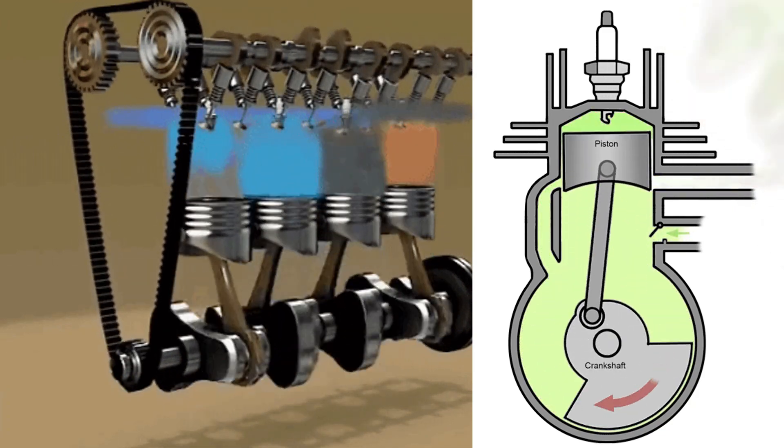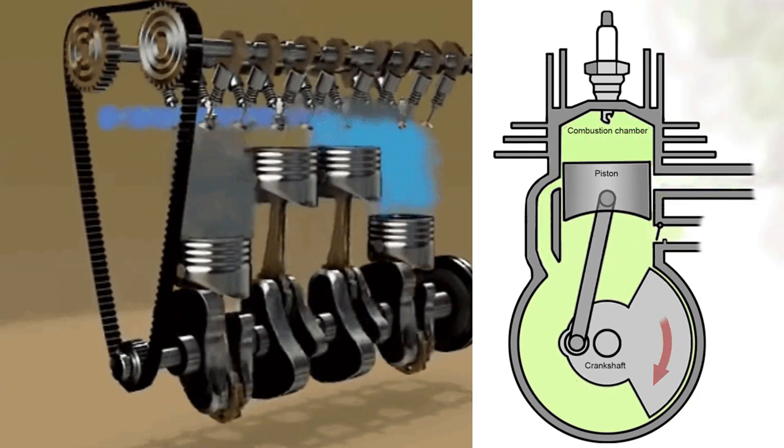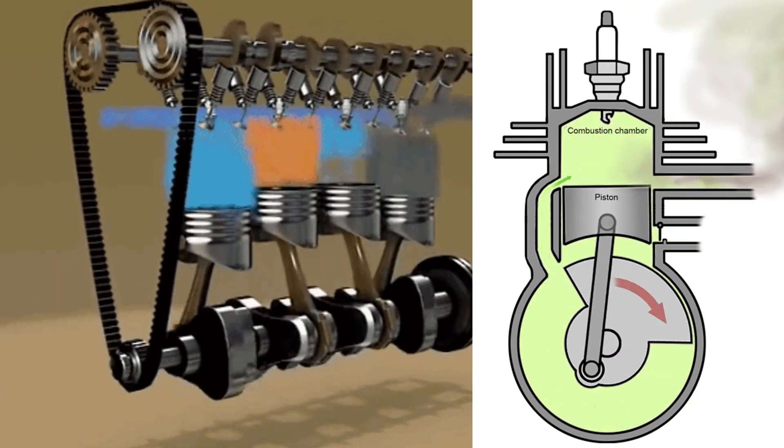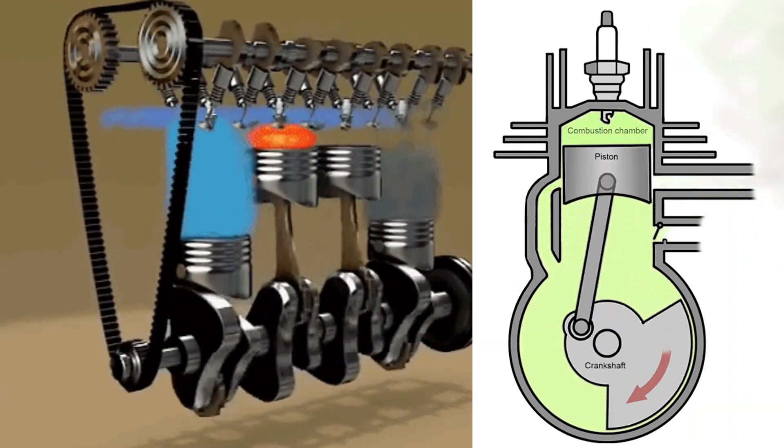A two-stroke engine is more powerful for its size and has a simpler design with fewer moving parts. But it wears out faster, uses more fuel, and produces more smoke.